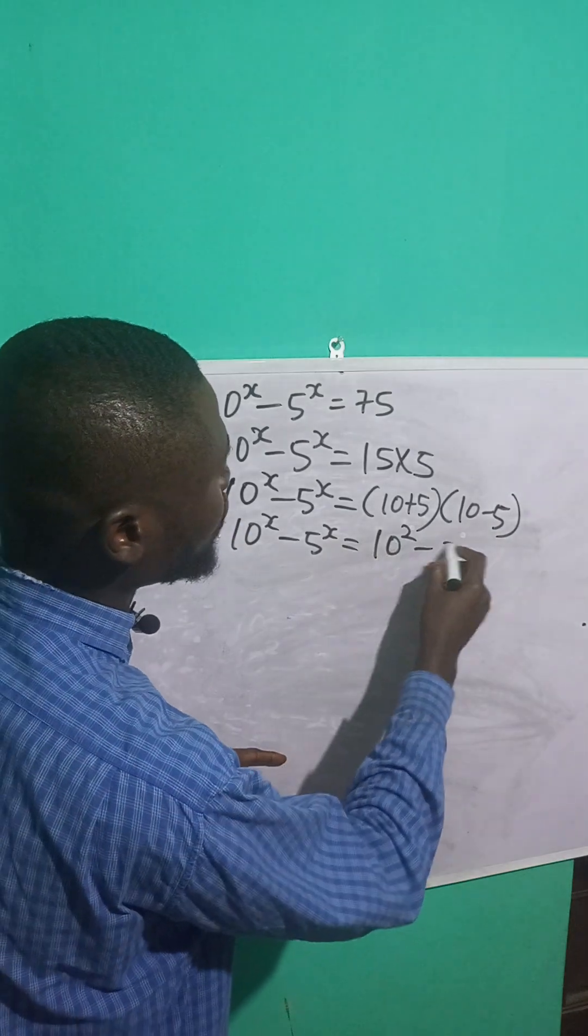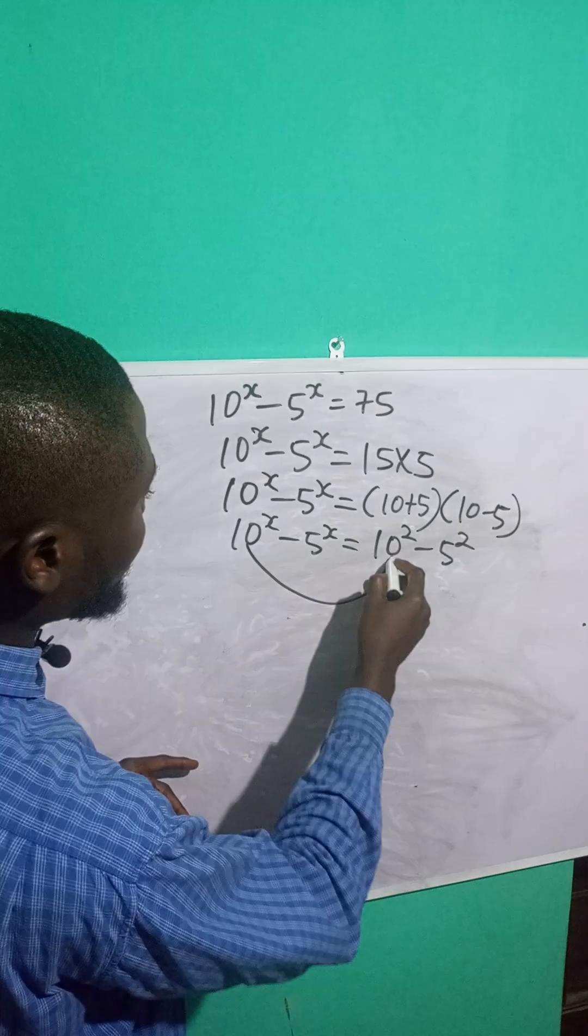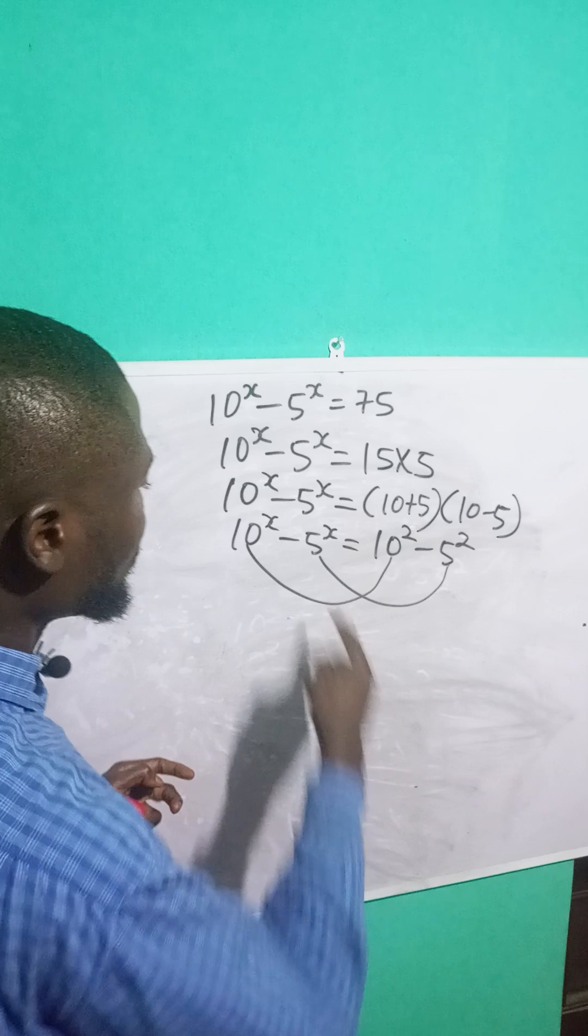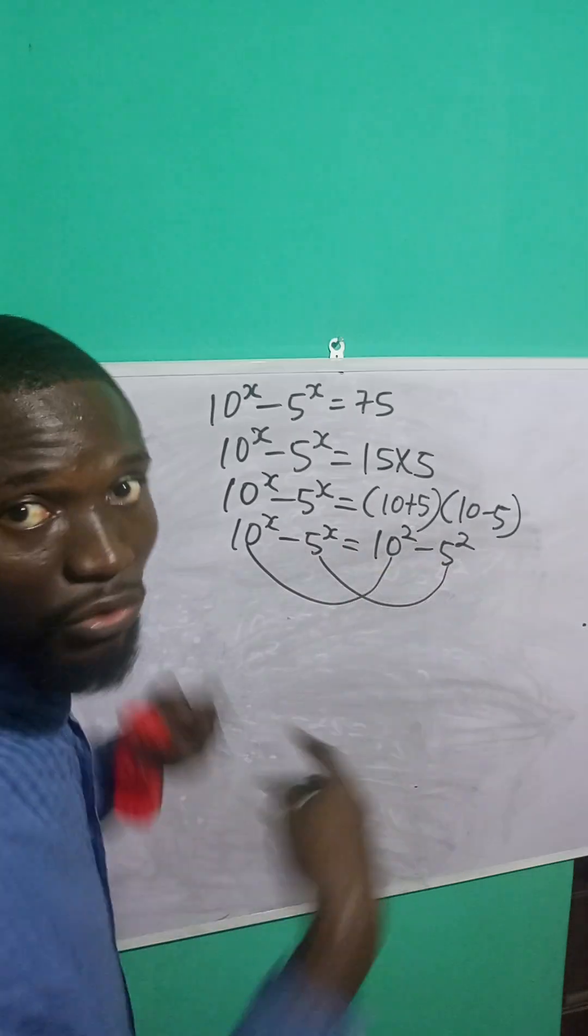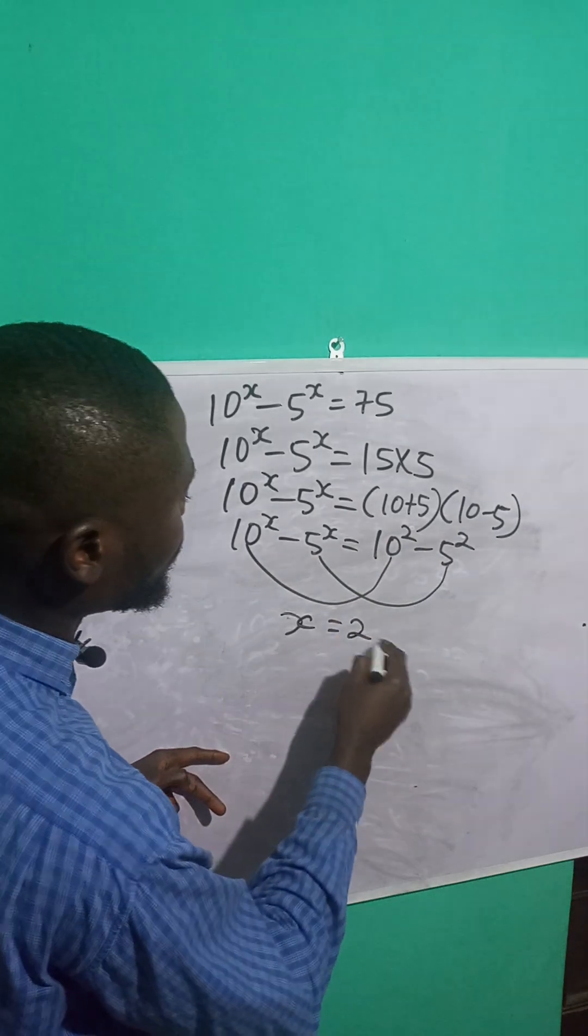So 10 raised to the power x minus 5 raised to the power x. Now notice that 10 is there, 5 is there, so they have the same basis. I can equate the power. So this means that the value of x is 2, because they have the same basis. So x is 2.